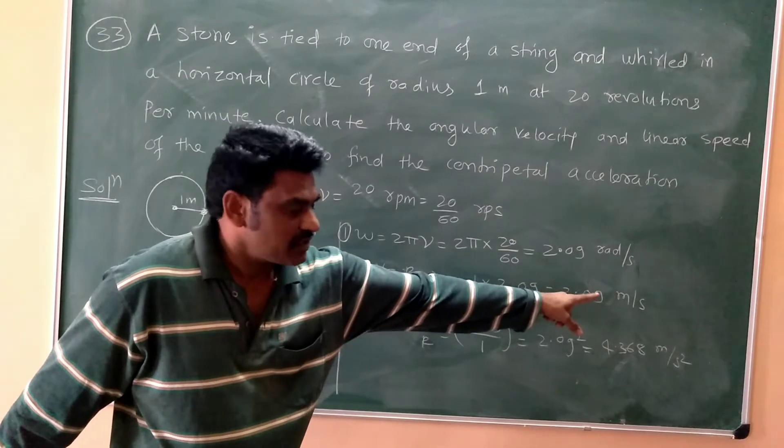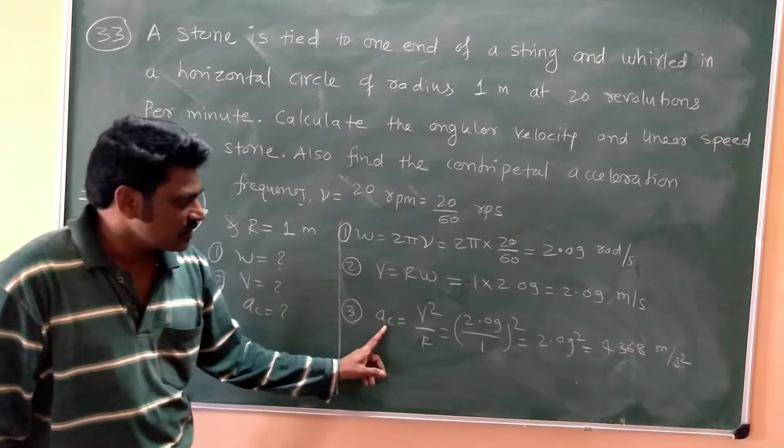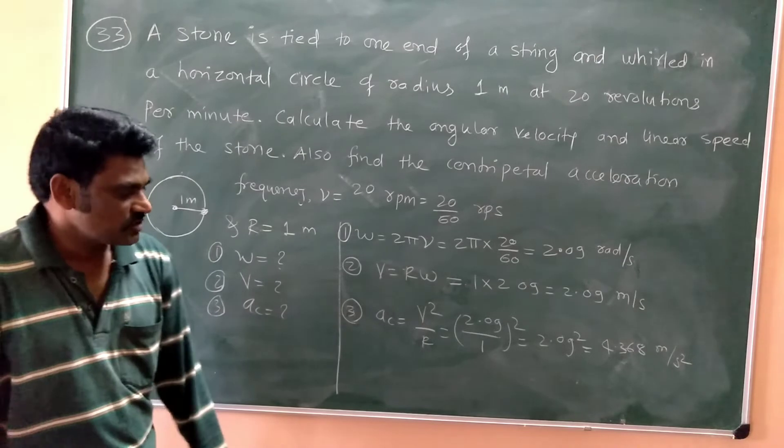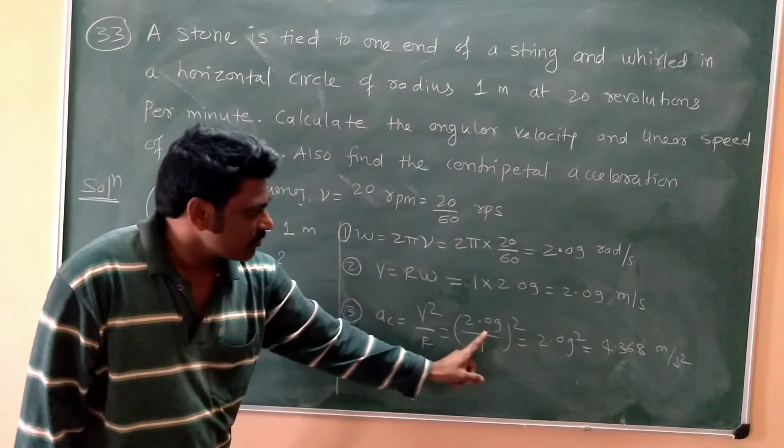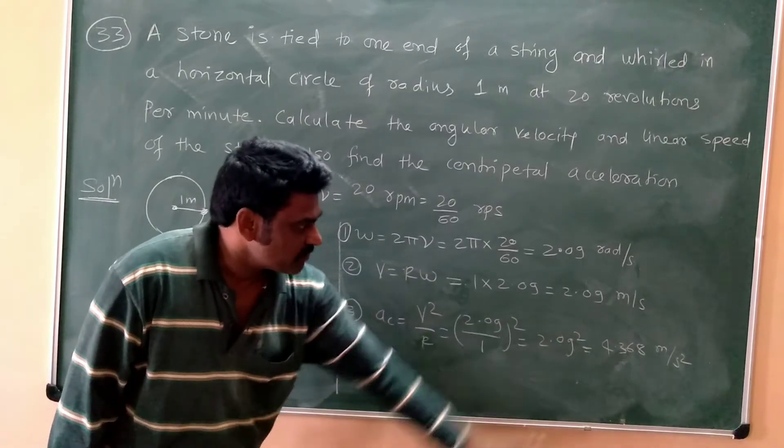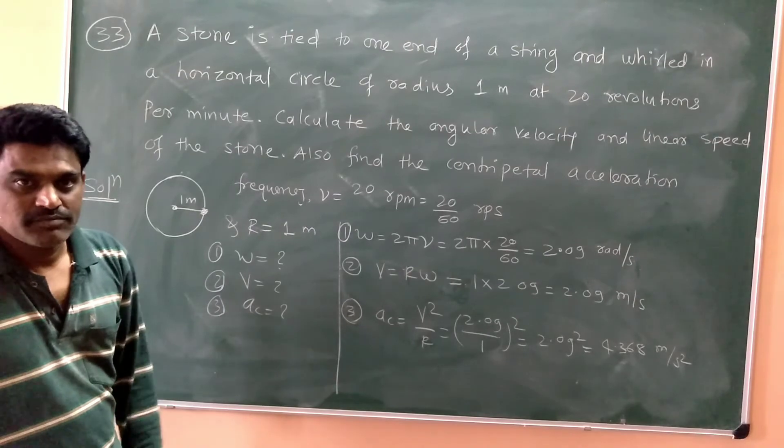But again, it will be different units, never mind the same value. Now third one, acceleration. The relation between linear speed and acceleration is V square divided by radius. So this velocity we have calculated, put it here, so this square will be 4.36 meter per second square. So like this, we can solve this, okay?